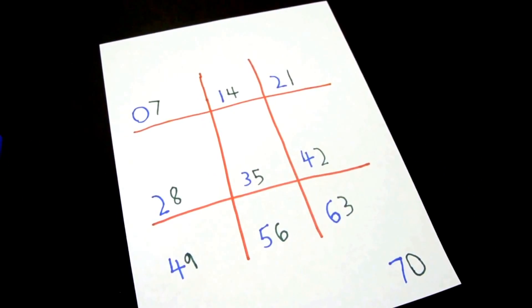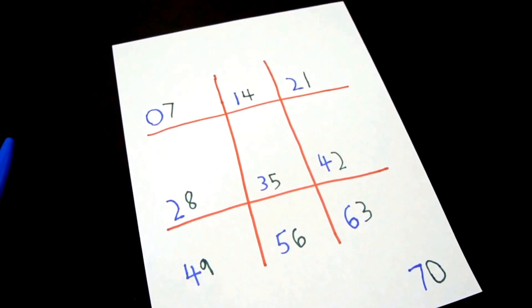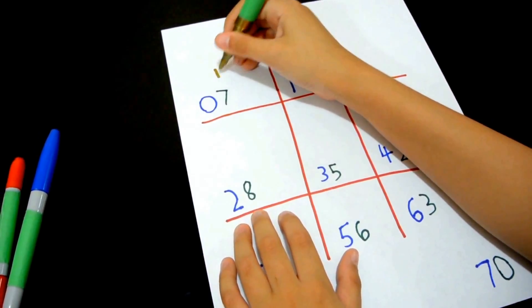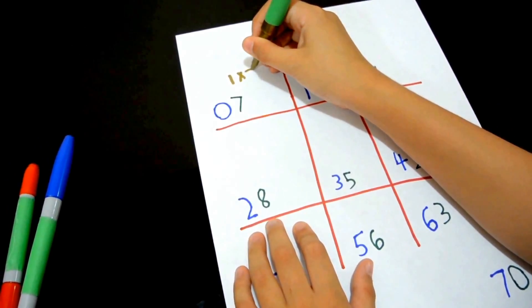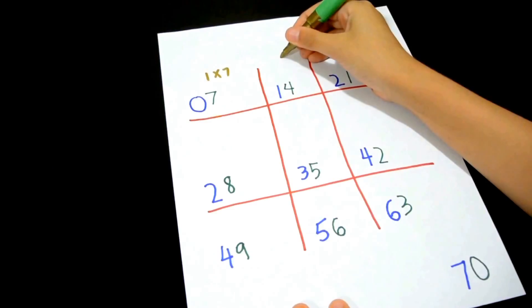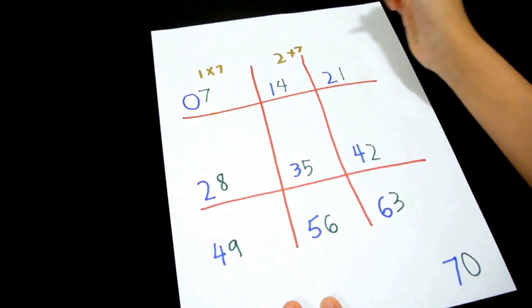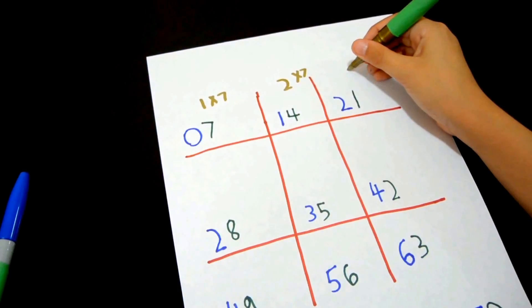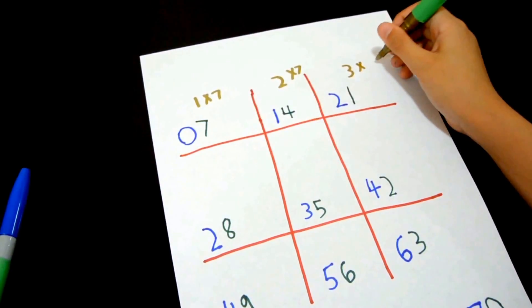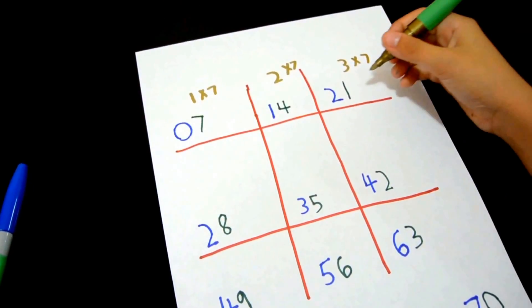The last step is to write down the equations. 1 times 7 is 7. 2 times 7 is 14. 3 times 7 is 21.